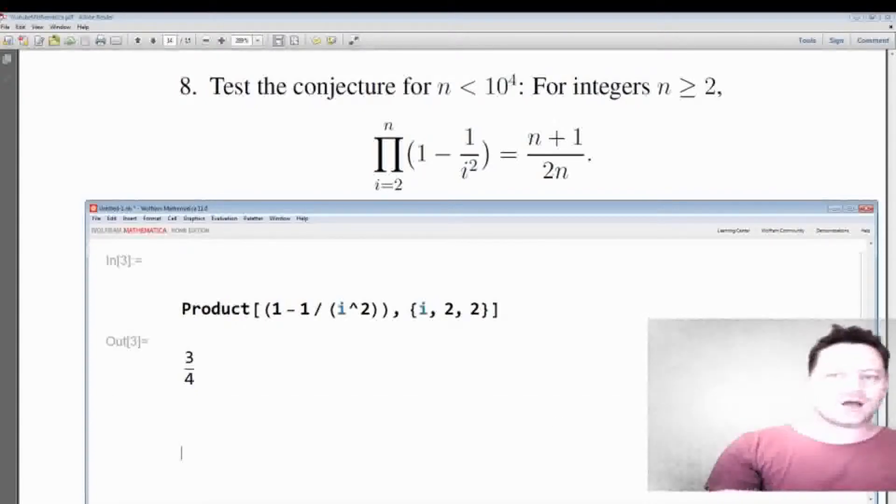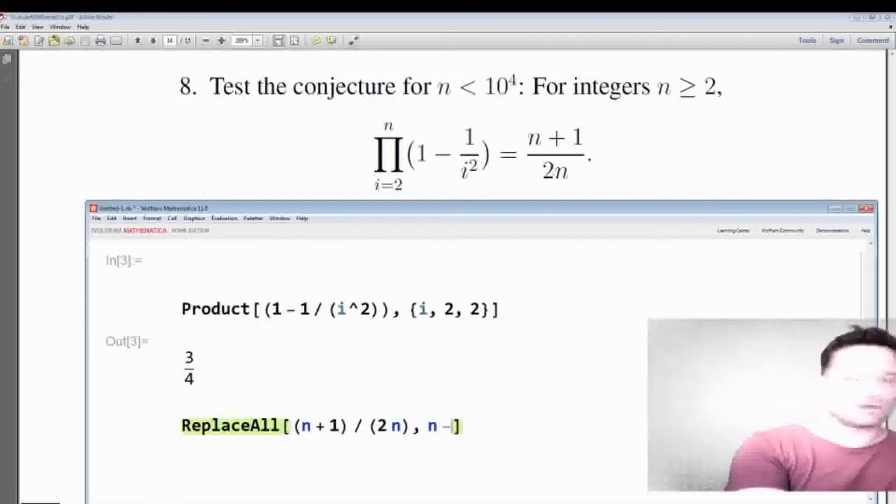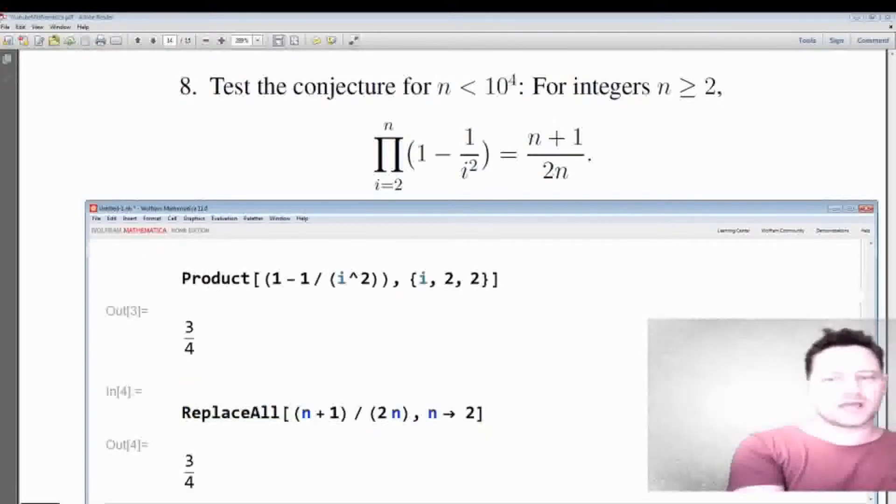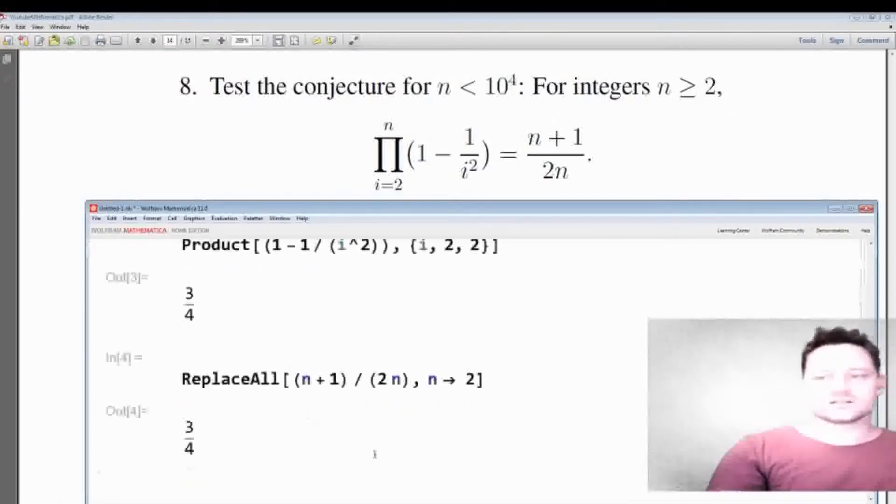All right, now let's try to substitute in n equals 2 into the right hand side. So I'll enter the formula n plus 1 over 2 times n, and then I'll just write replace all and I am replacing n with 2. Okay, now shift enter and see what we get. Well, 3 quarters, so